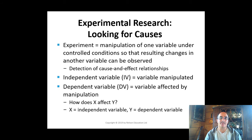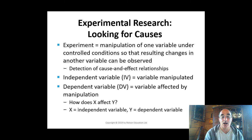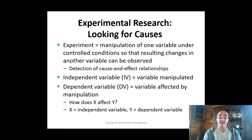An experiment is a research method where there is manipulation of one variable under carefully controlled conditions so that the resulting changes in another variable can be observed. Experiments are very powerful in that they allow for detection of cause and effect relationships — does X cause Y? The independent variable (IV) is the variable that the experimenter controls or manipulates. The dependent variable (DV) is the variable thought to depend, at least in part, on manipulation of the independent variable. X would be the IV and Y would be the dependent variable.